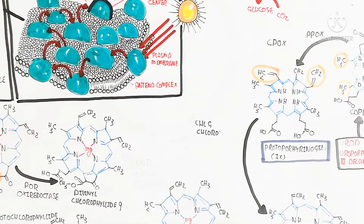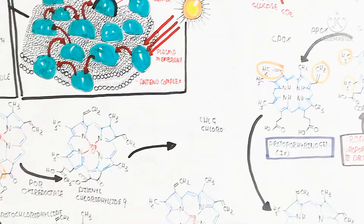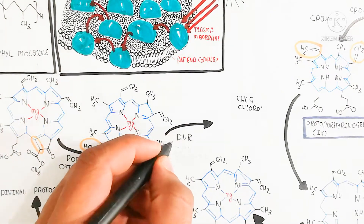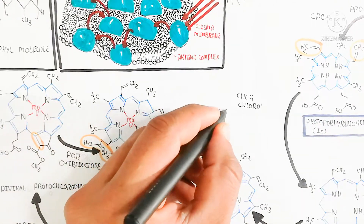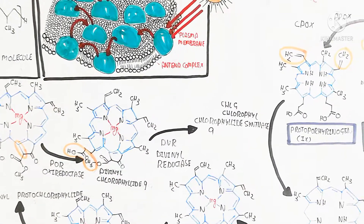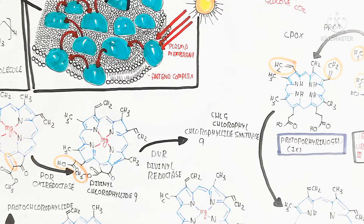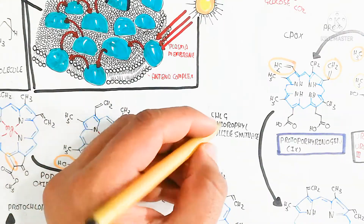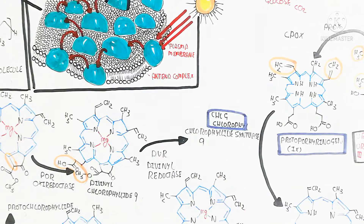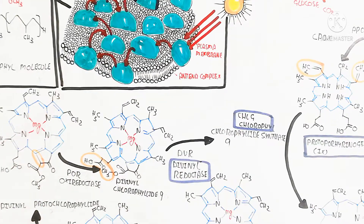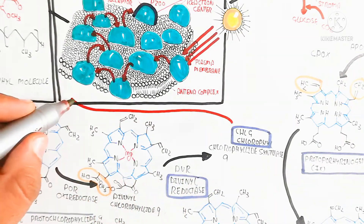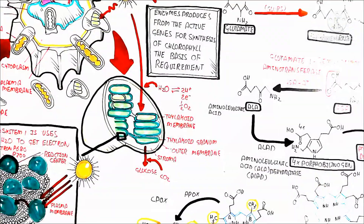After divinyl chlorophyllide 9, the divinyl reductase enzyme (DV reductase) acts, followed by the chlorophyllide synthase enzyme, which is used to produce chlorophyll. So chlorophyllide synthase enzyme produces the final chlorophyll molecule.